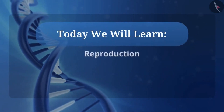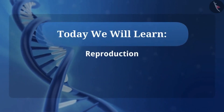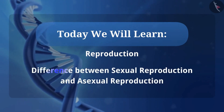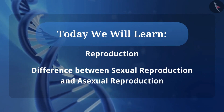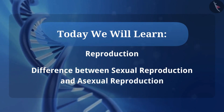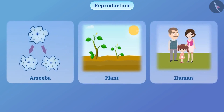Today we will learn important things about reproduction and the difference between sexual reproduction and asexual reproduction. Reproduction is a process in which an organism produces its offspring. For example, an amoeba gives birth to another amoeba, a plant produces another plant similar to it, and human beings produce children.